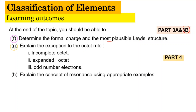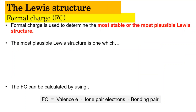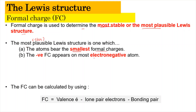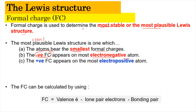The learning outcome of g will be covered in part 4 and the learning outcome of h in part 5. So without further ado, let us conclude part 3b. Formal charge (FC) is used to determine the most stable or most possible Lewis structure. The most stable Lewis structure occurs when atoms have the smallest formal charges, and the most electronegative atom will have the negative formal charge, while the most electropositive atom will have a positive formal charge.